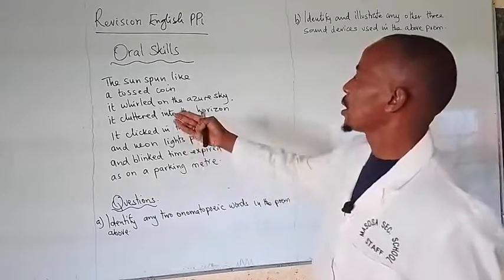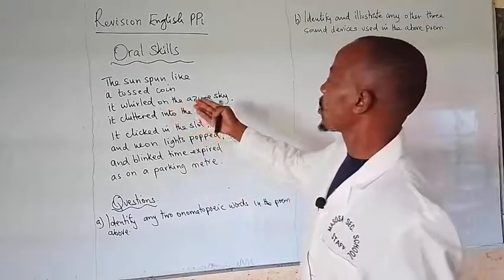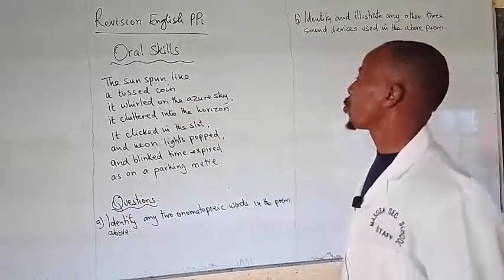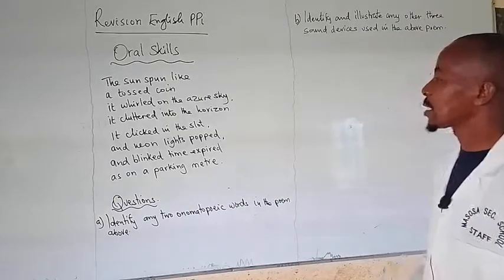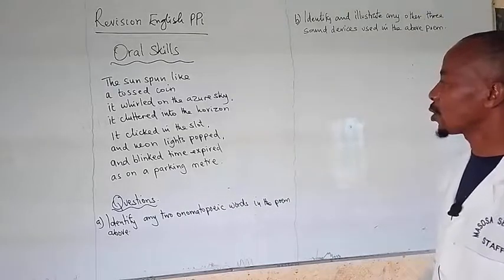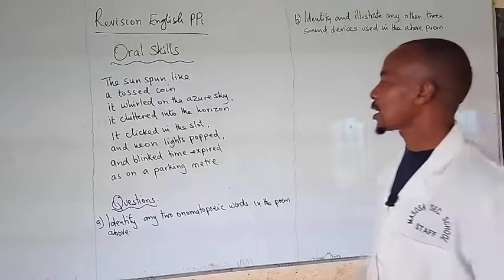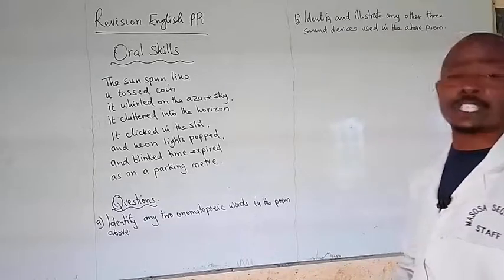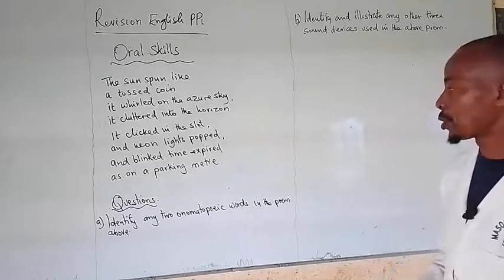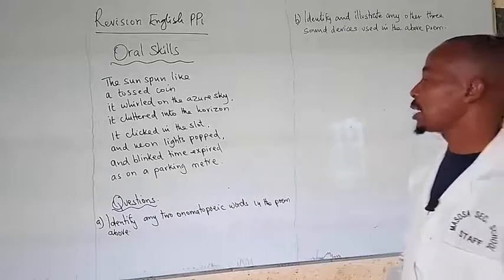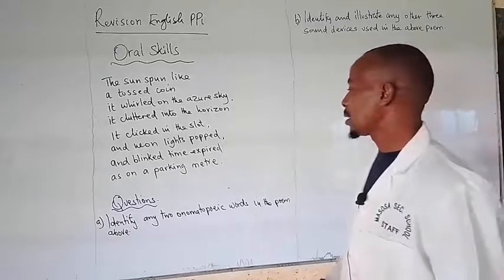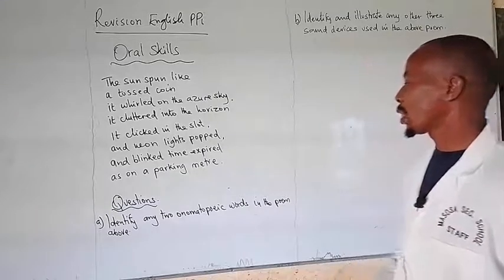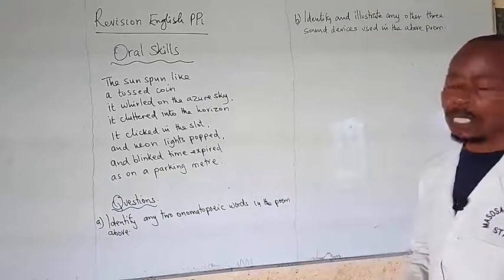So the poem is: the sun spun like a tossed coin. It whirled on the azure sky. It clattered into the horizon. It clicked in the slot and neon light popped and blinked. Time expired as on a parking meter.